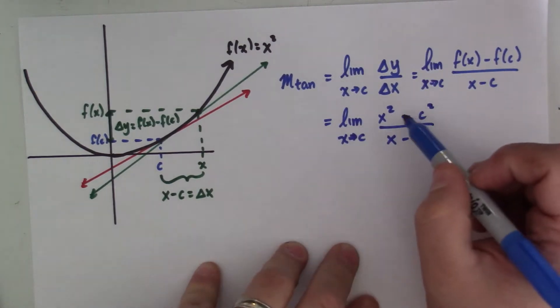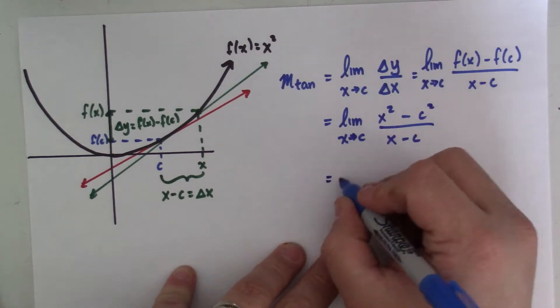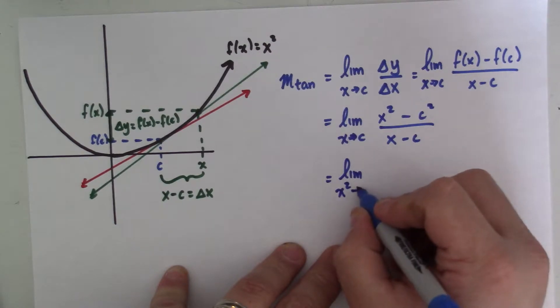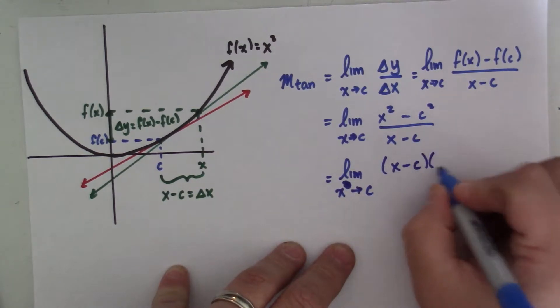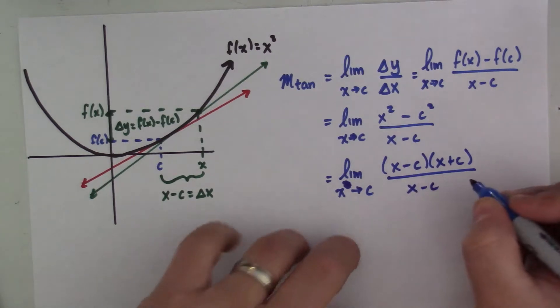Then what I'm going to do is use a little bit of algebra, and I'm going to factor the top of this expression. And I know that because x squared minus c squared is the difference of perfect squares, I can factor that as x minus c times x plus c over x minus c.